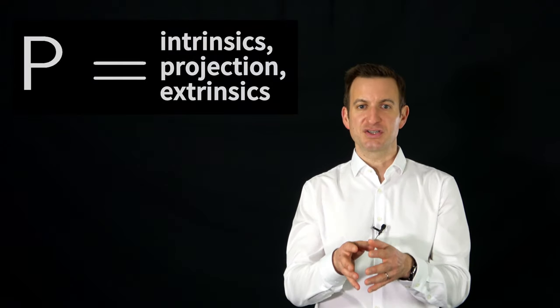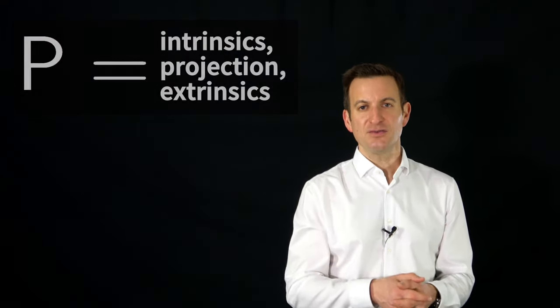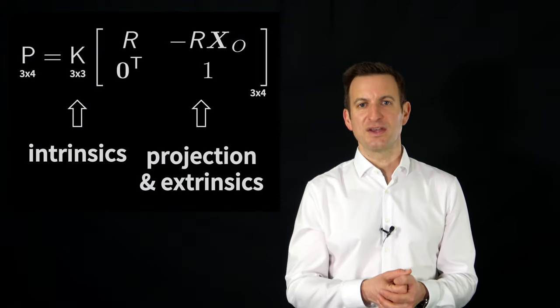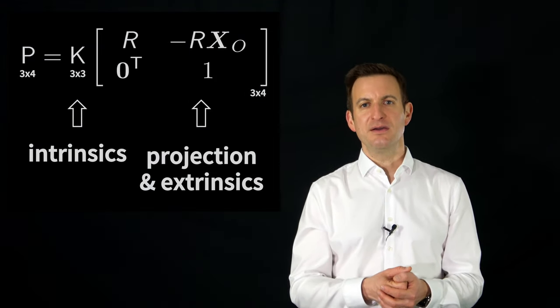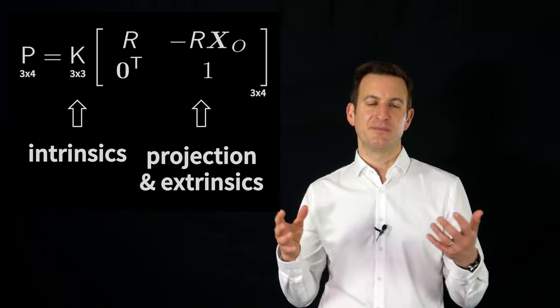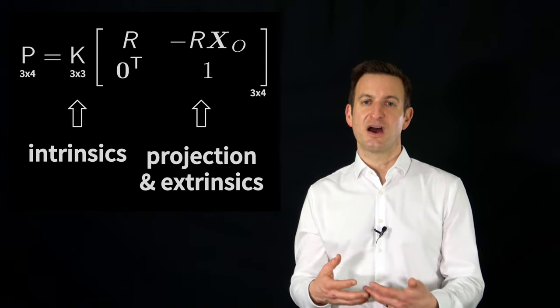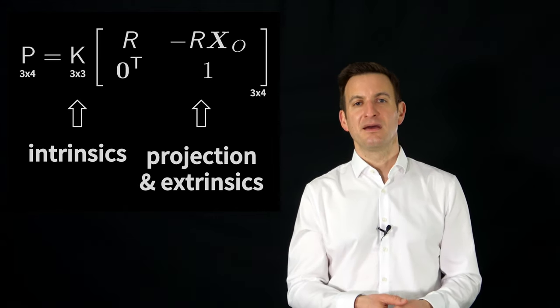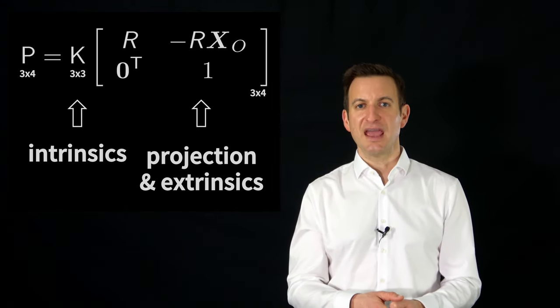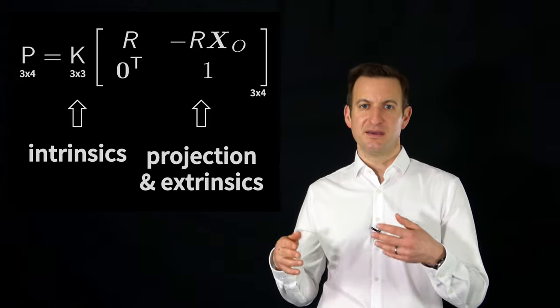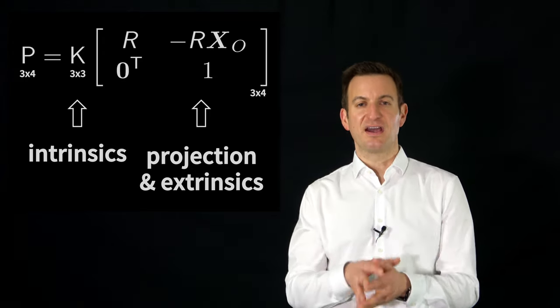And so what we can do if we put all this together, so the transformation from the world coordinate system to the camera coordinate system, this projection, and the camera intrinsics, then we end up with an equation of that form. So P consists of a 3 by 4 matrix which has certain entries in here related to the extrinsics, these are R and x0, and then the internal parameters K which describe the mapping inside your camera.